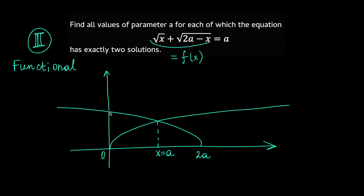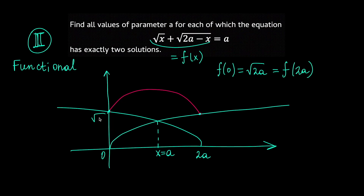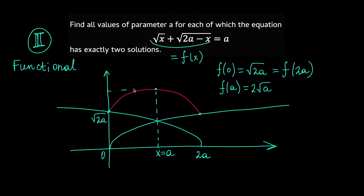If I sketch the sum of these functions, I get a curve where f(0) = √(2A) = f(2A). The point x = A appears to be the maximum, with maximum value f(A) = √A + √(2A − A) = √A + √A = 2√A. So the minimum endpoint value is √(2A) and the maximum value is 2√A.